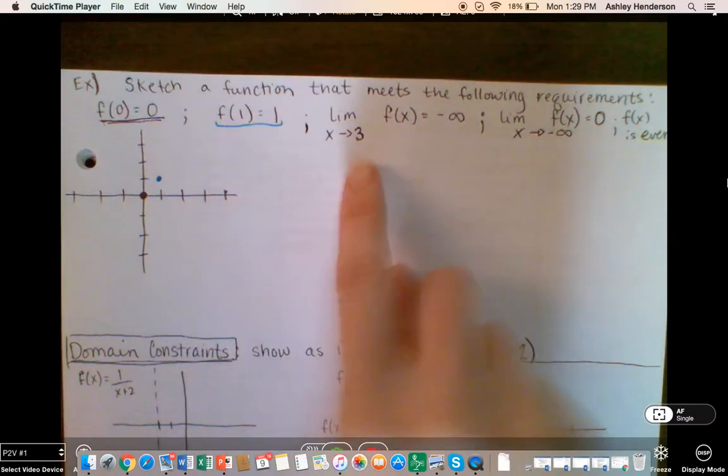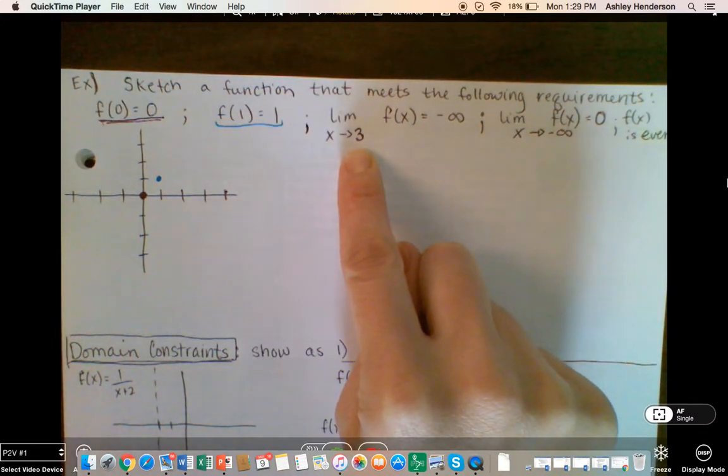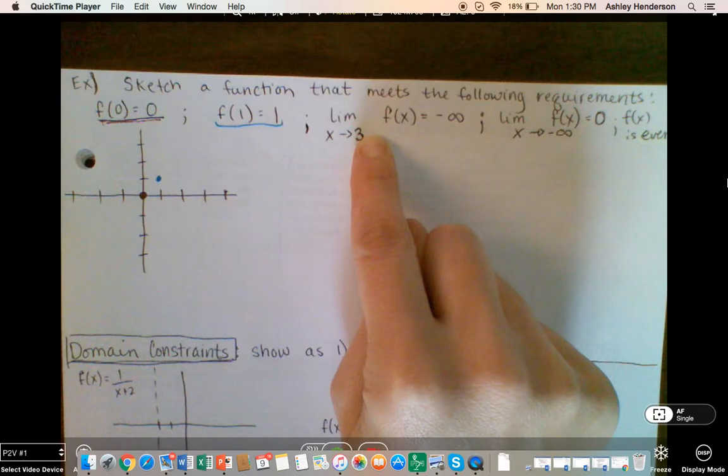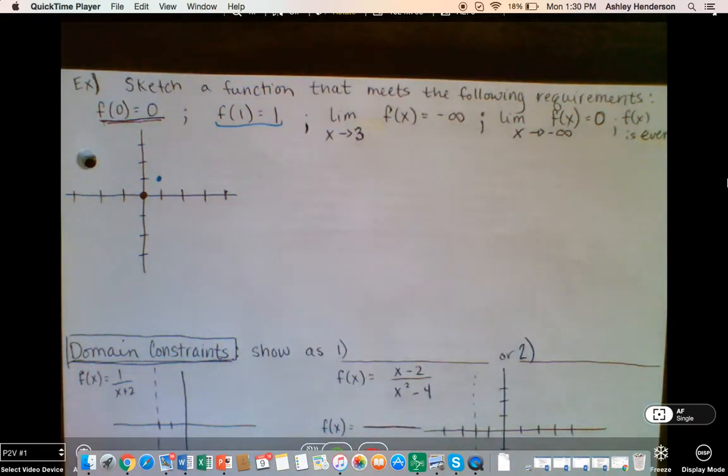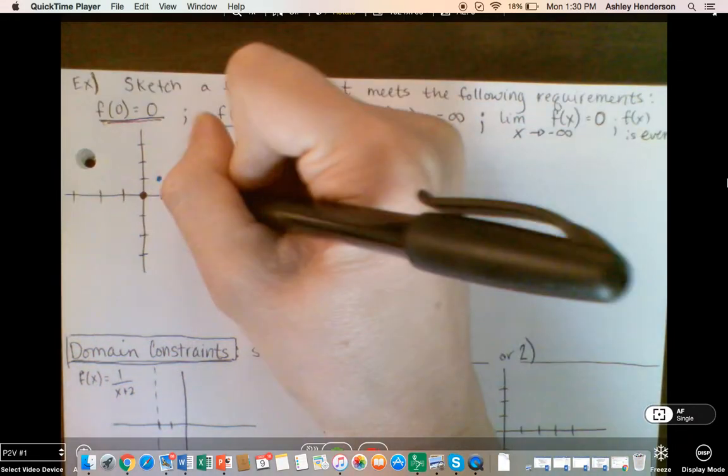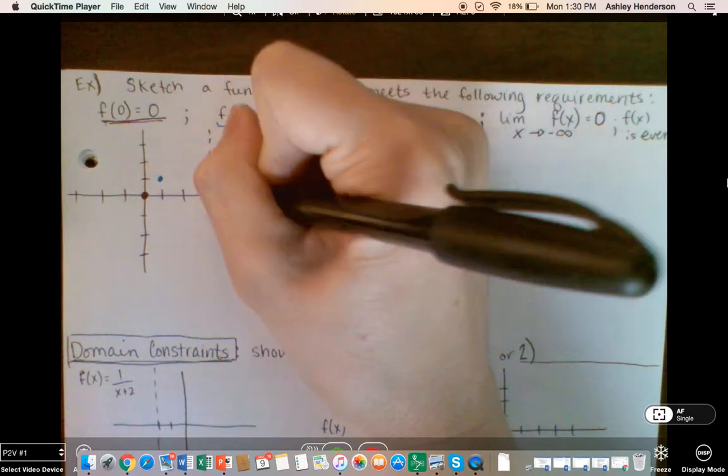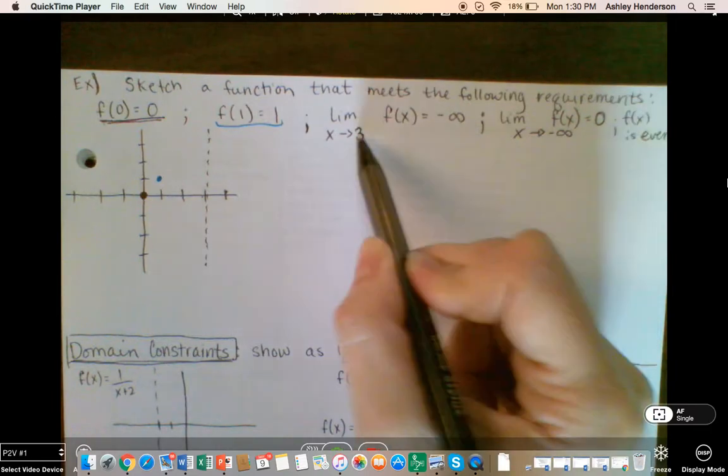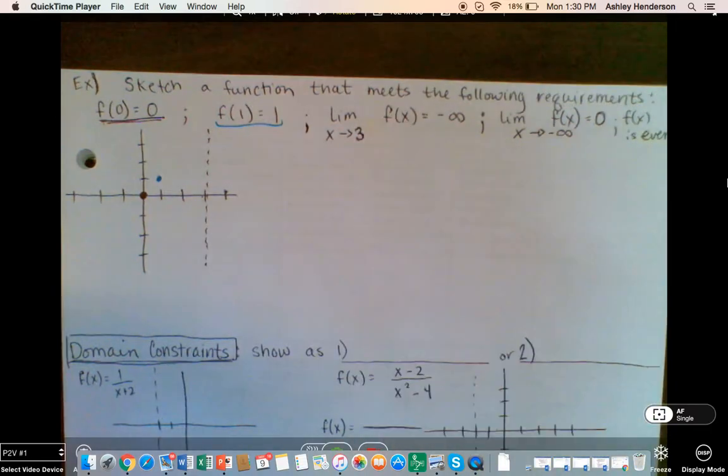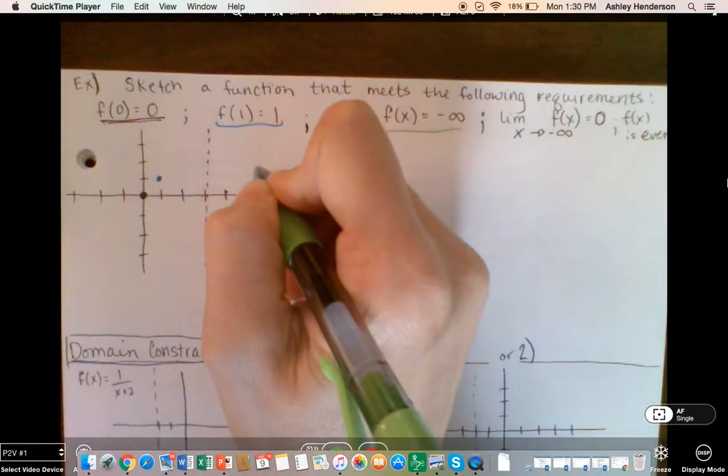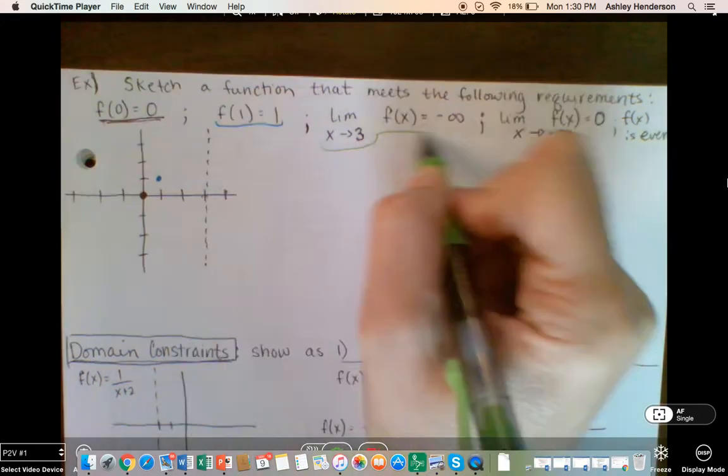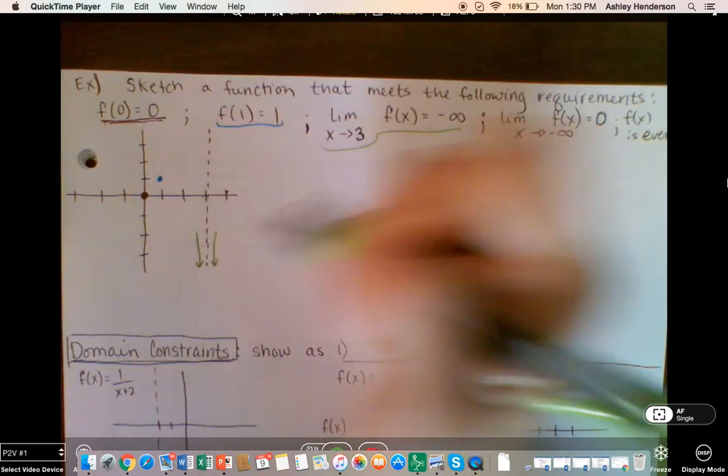The limit as x approaches 3, not necessarily from the right or from the left, there's nothing there, that means both of them is negative infinity. So that means that at 3, we have some serious domain issues, and that as we come at it from the left and the right, they're both going to go to negative infinity. So it's going to do something like this, we don't know much more about it at this point, but it does do that.